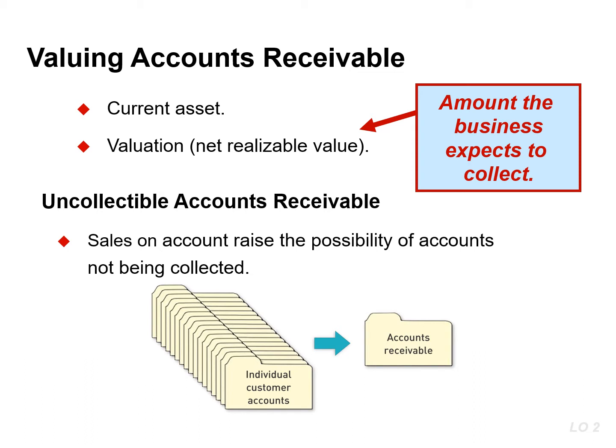Accounts receivable is made up of individual customer accounts, and the accounts receivable amount on the balance sheet represents the total of these individual customer accounts. When a business extends credit to its customers, it knows that some of these customers will pay them, but unfortunately some will not. A business may not learn which customers will not pay until the next accounting period.